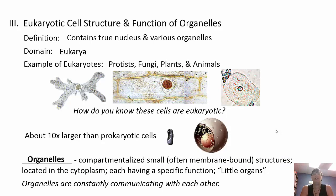Eukaryotic cells have a true nucleus and various organelles. They fall under the domain Eukarya, with four kingdoms: Protista, Fungi, Plantae, and Animalia. You can identify them by the visible stained nucleus. They are about ten times larger than prokaryotic cells. Organelles are constantly communicating with each other — each has a specific function, like little organs, often membrane-bound compartments in the cytoplasm.